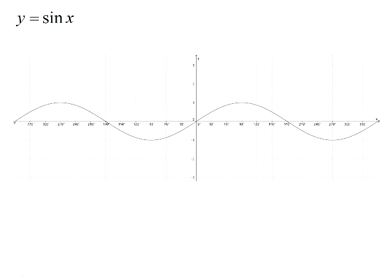If we start with the graph y equals sin x and look at the effect of a — so y equals a sin x — the a value of the unchanged sin graph is 1, the parent graph. That means the parent graph for sin x has an amplitude of 1. So whatever the a value is, it tells us what the amplitude of the graph is going to be.